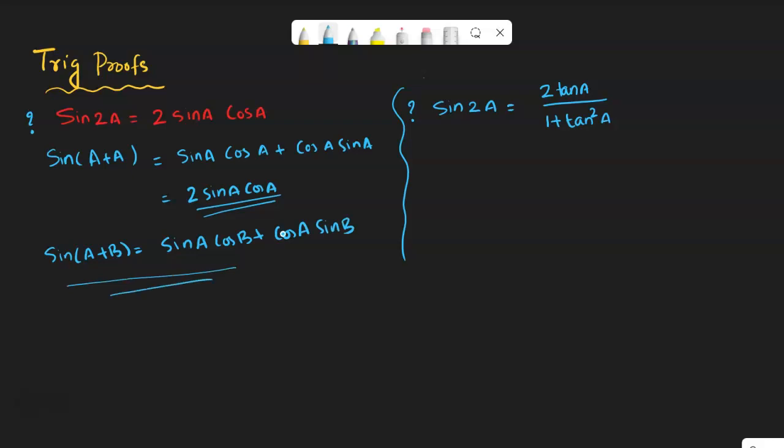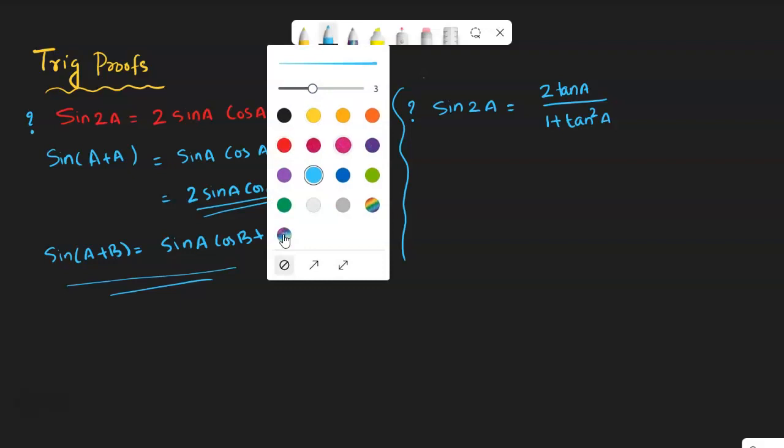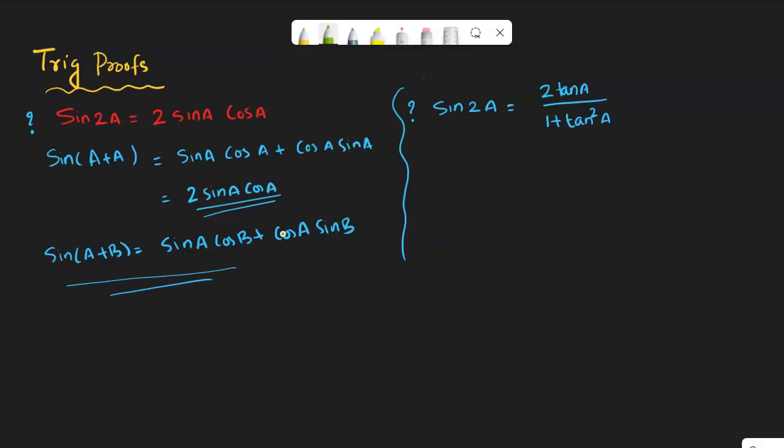Okay, that is the first proof. And now I'm going to the second proof. Second proof is actually asking for sin 2a, the same sin 2a in terms of tan a.